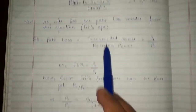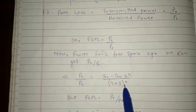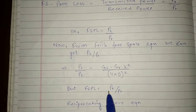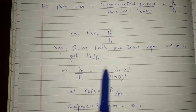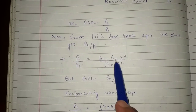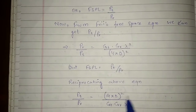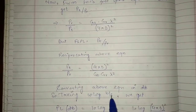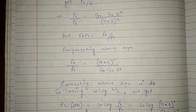PR/PT equals GT·GR·λ² / (4π)² · D². Since free space path loss equals PT/PR, we reciprocate this equation and write PT/PR as (4πD)² / (GT·GR·λ²). Now we convert this equation to decibels by taking 10 log of both sides.